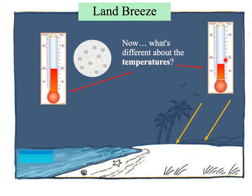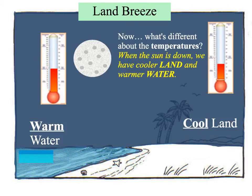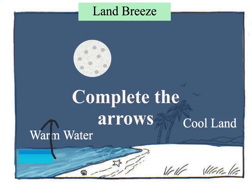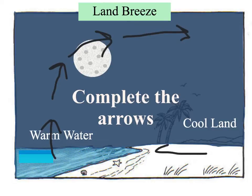Looking at our thermometers, we'll see that at night over the land the temperature is lower, and now the water is a little bit higher. At night we have cool land and warm water. When the sun goes down, the land begins to cool off, but since water changes temperature much slower than land, the water is still somewhat warmer. Since the water is a little bit warmer, the air over it will be warmer — that's where our area of low pressure is. The warm air from the water rises, and since the air over the land is cooler it's higher pressure, so it goes out to sea. This gives us a land breeze because it's coming from the land.